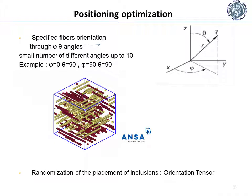As far as positioning of the inclusions within the RVEs is concerned, the first attempts were guided towards the use of specific phi and theta angles. This method had the following drawbacks: first of all, there was no possibility of positioning a large number of inclusions with different orientation; secondly, the geometry of the resulting model was not very realistic. Later on, there was an attempt to position the inclusions in a random position.